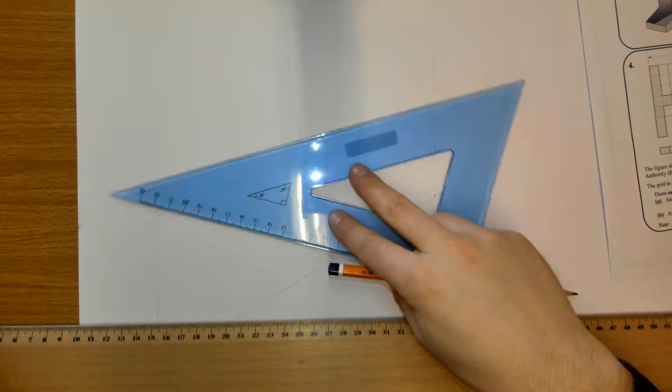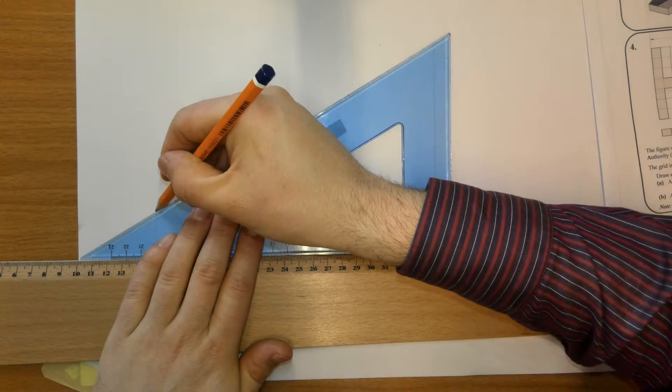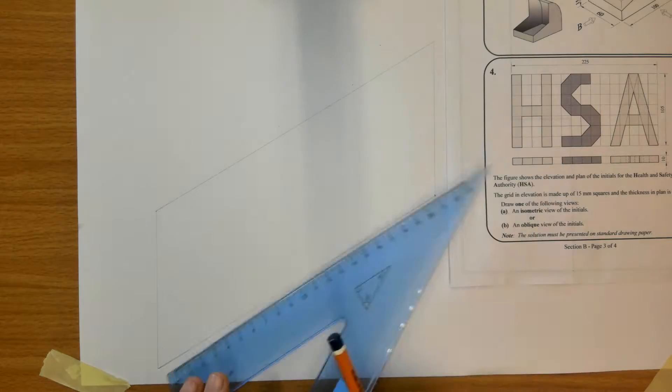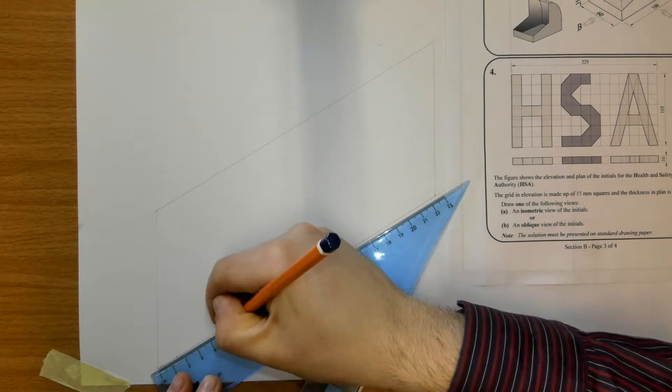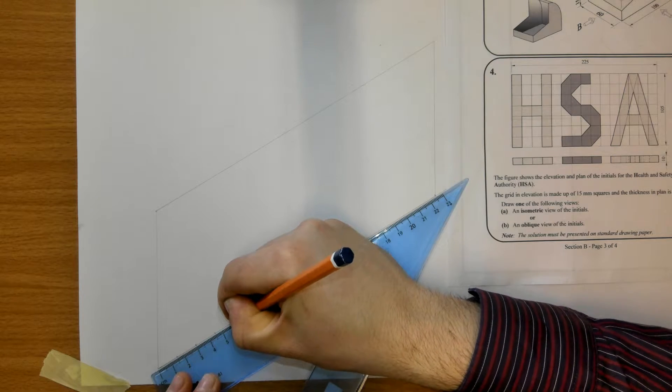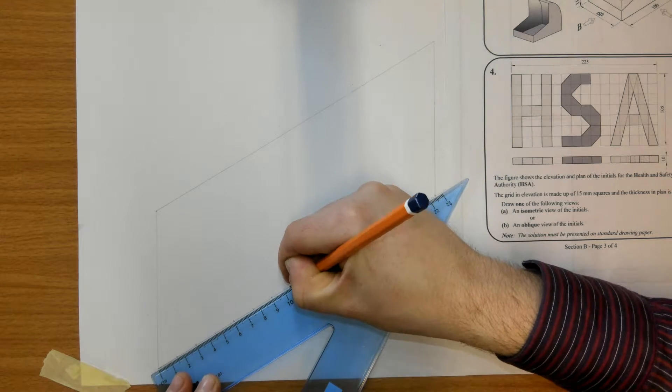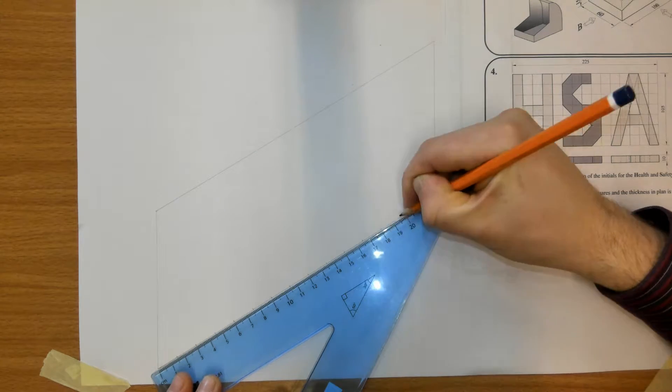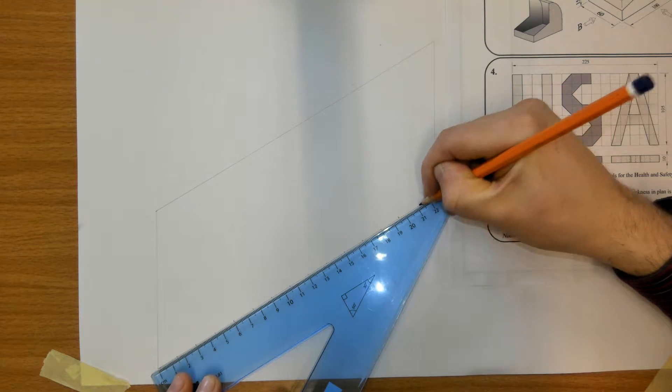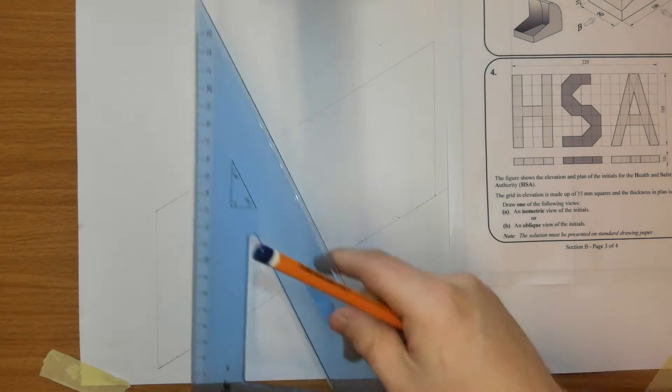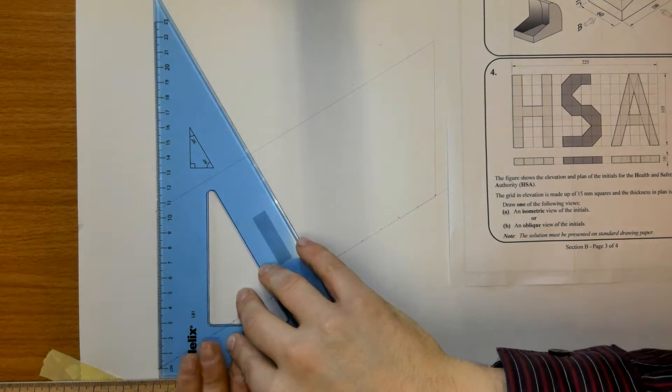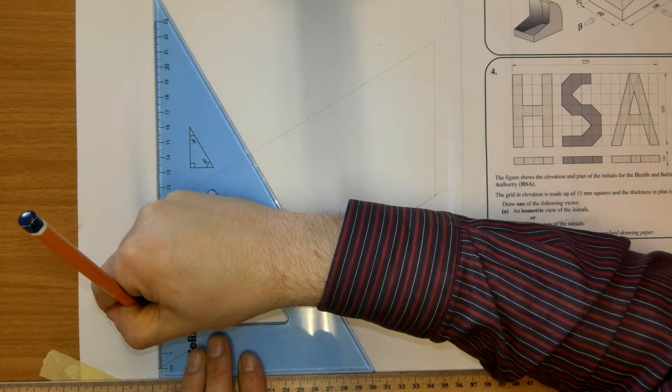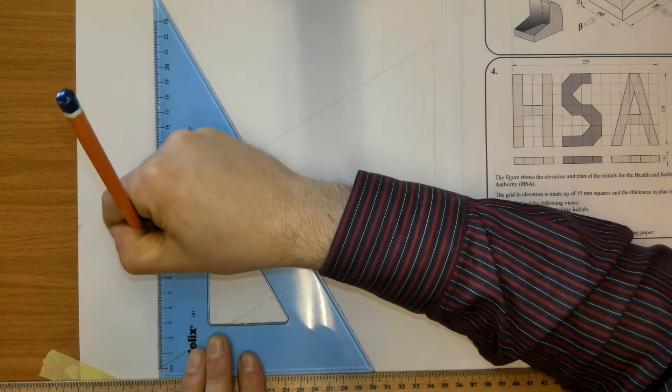We're going up 105, then connecting these together. It says the grid is made up of squares of 15 millimeters, so we're going to mark every 15 along this axis: 15, 30, 45, 60, 75, 90, 105, 120, 135, 150, 165, 180, 195, 210, and 225. Keep your set square stationary marking these in to increase accuracy. Now going upward: 15, 30, 45, 60, 75, 90, 105.